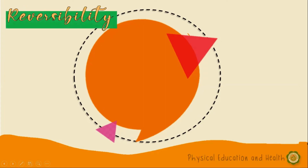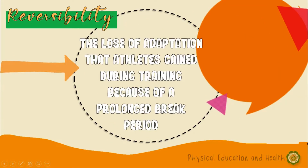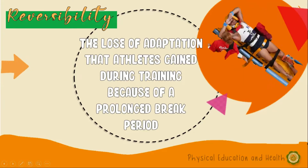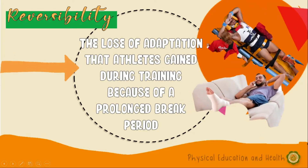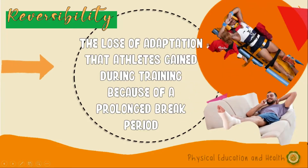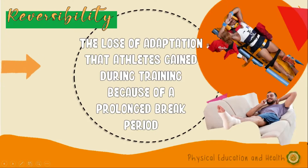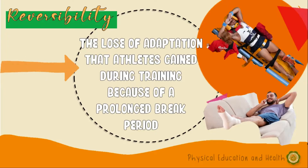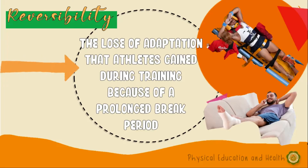Next, reversibility — the loss of adaptation that athletes gain during training because of a prolonged break period. For example, athletes who are involved in an accident are given a long rest or break to recover. Upon returning to training, it is possible they will need to reacclimate to the workload.